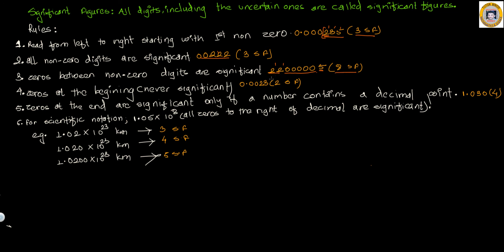Rule four: zeros at the beginning are never significant. If you have zeros at the beginning, before the non-zero terms, they are not significant. In this case there are three zeros before the non-zero digits, so those zeros are not significant — we have only two significant figures.